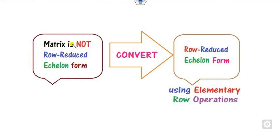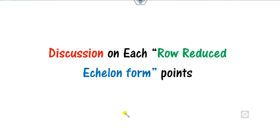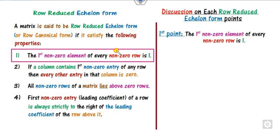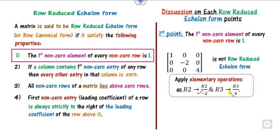Once a matrix is not row reduced, your target is to convert it into row reduced form using elementary row operations. Since each row must have a leading 1, we can apply these elementary operations. Once you apply them, the first property becomes satisfied.